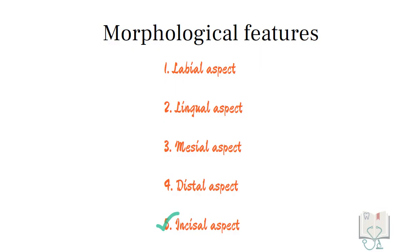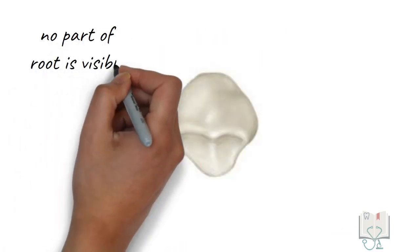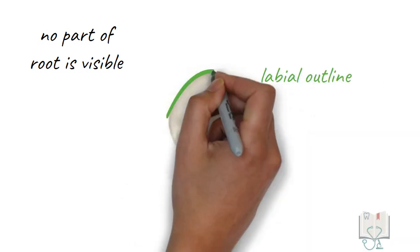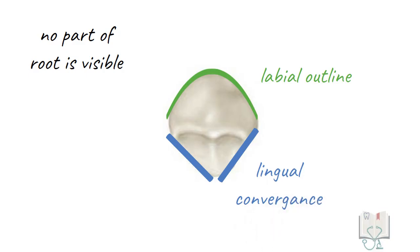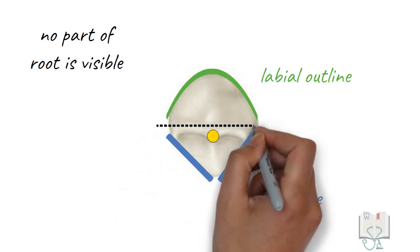Finally, the incisal aspect. As with all permanent teeth, no part of the root is visible from the incisal aspect. The labial outline is convex and the lingual outline shows lingual convergence. The cusp tip lies slightly lingual to the center.